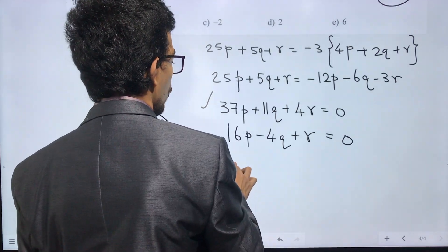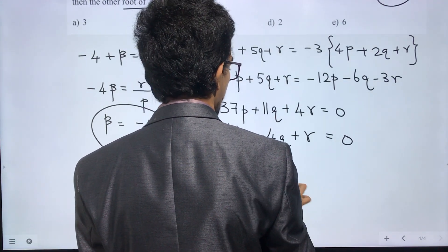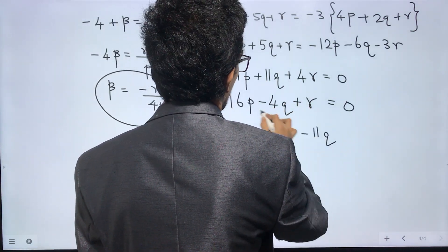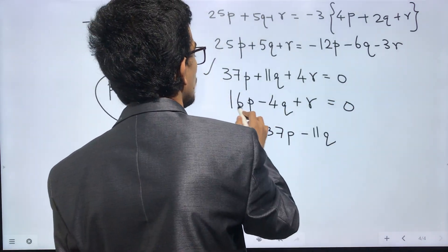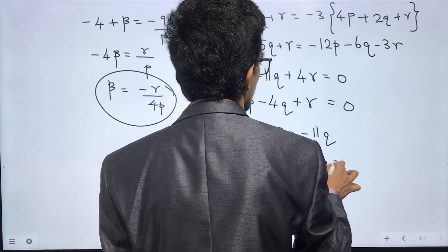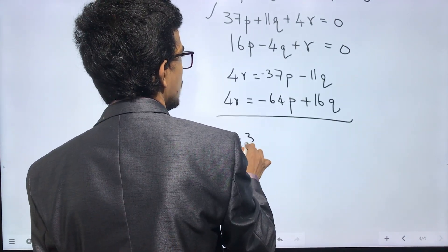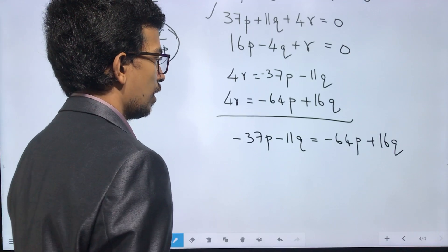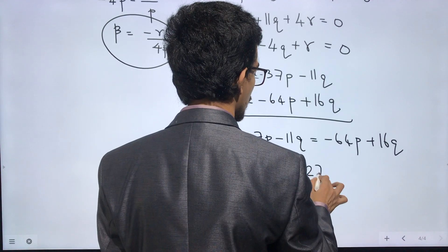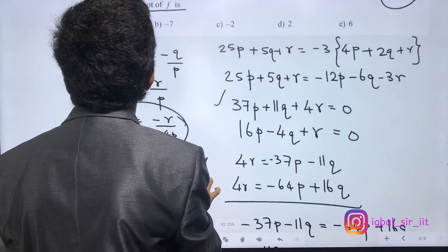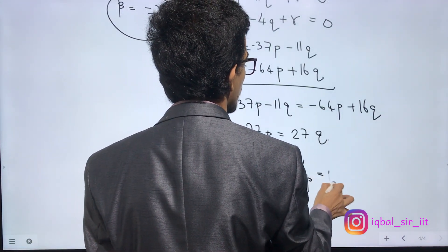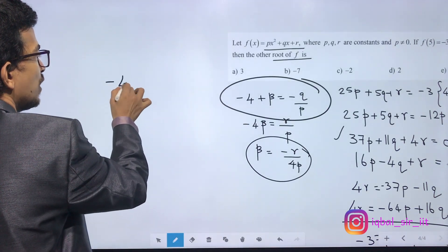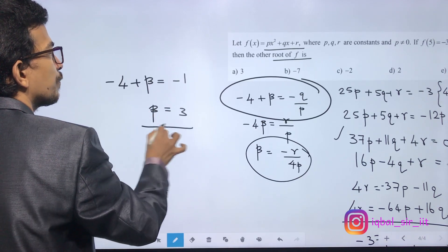We eliminate r and n from the equations. Using 37p minus 11q equals 0 and substituting minus 64p plus 16q, we get 27p equals 27q, so q divided by p equals 1. Substituting back: minus 4 plus beta equals minus 1, so beta equals 3. The other root is 3.